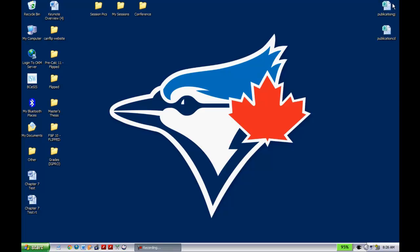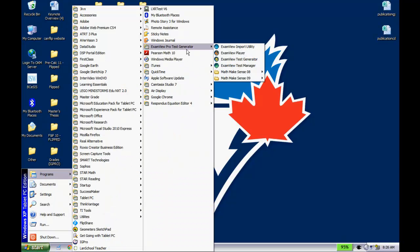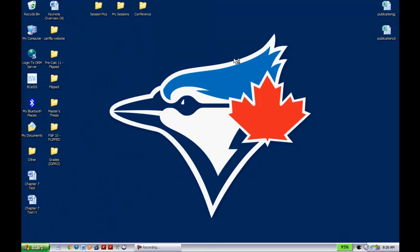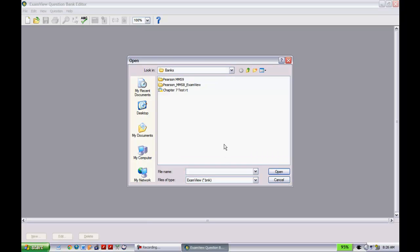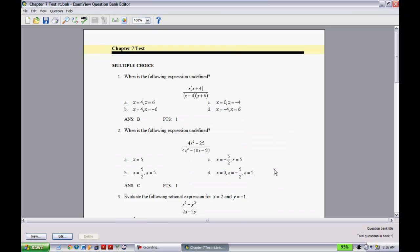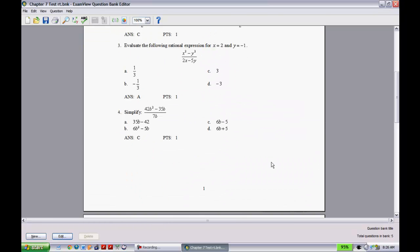To show you how this works, if I go into my ExamView, I'll just go and create a test, or go into my generator. You can see that if you open an existing question bank, you'll see that I have some other stuff here, but my Chapter 7 Test is sitting right there. You hit open, you'll notice that these are my five questions.